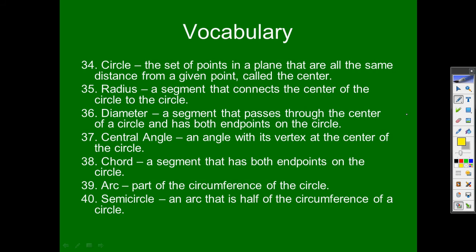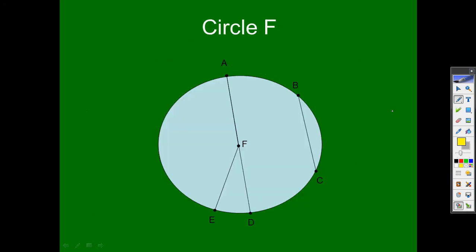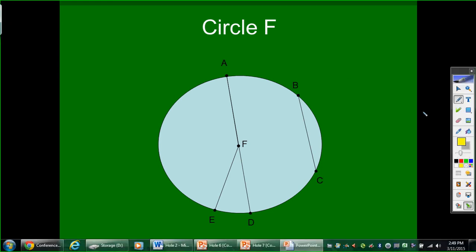I'm going to go ahead and keep moving. Along with the vocabulary, we should be putting this information on a diagram. If I look at this diagram, this is what we call circle F. The entire thing is a circle.